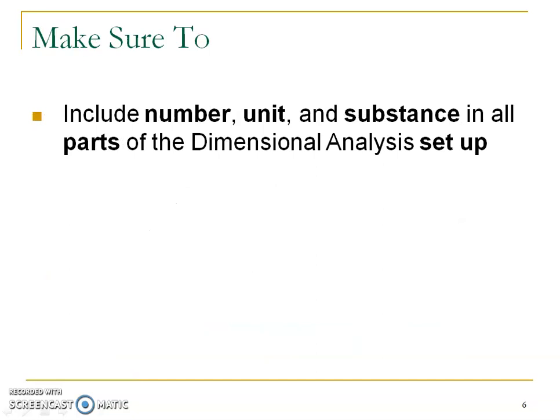We also want to make sure not only do we want a number and a unit. Up until now, every conversion problem, every dimensional analysis problem we've done, always included a number and a unit — and those were really, really important. Well, for stoichiometry problems, the substance is going to be equally as important. So every single part of the setup, you're going to see me write the number, the unit, and the substance. This is going to be really important because of that mole ratio — the unit is the same, but it's the substance that's going to be different.